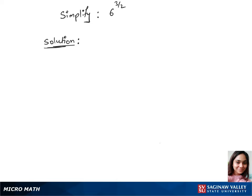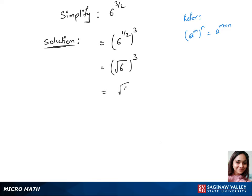Let's simplify this by first splitting up the power 3/2, just like this rule here, and write this as 6 power 1/2, whole power 3. Now 6 power 1/2 is nothing but square root of 6, and whole power 3 will be the same. We can write this as root 6 times root 6 times root 6.